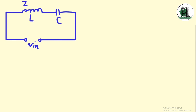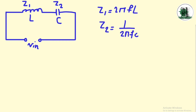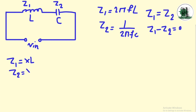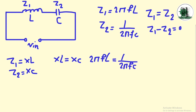Each one of C and L has an impedance, and their formulas are standard. You can call the impedances XL and XC respectively. At a certain frequency, the impedance of L and C are equal, and the resulting impedance is equal to zero. The main method to analyze these types of circuits is based on complex numbers, but we can get the same result by these simple formulas.